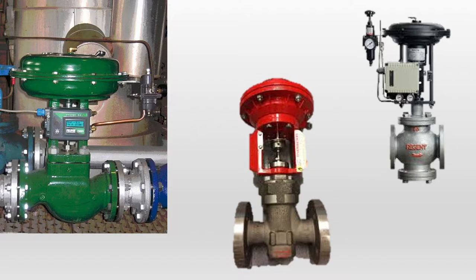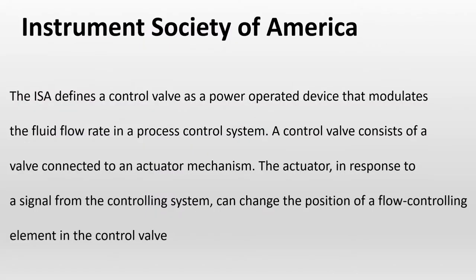So how do we define a control valve? If you want to define a control valve you have to refer to ISA — the Instrument Society of America. The ISA defines a control valve as a power-operated device that modulates the fluid flow rate in a process control system. A control valve consists of a valve connected to an actuator mechanism. The actuator, in response to a signal from the controlling system, can change the position of a flow-controlling element in the control valve.